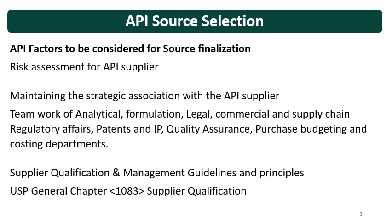API source selection cannot be handled by one person because different teams have different aspects to evaluate — like analytical, formulation development, legal, commercial and supply chain, regulatory affairs, patent and IP (intellectual property), quality assurance, purchase, and budgeting and costing departments. All these departments work together and they check the API source and the API from their own perspective. That's why API source selection becomes very, very critical and time consuming, but with good teamwork it can be achieved.